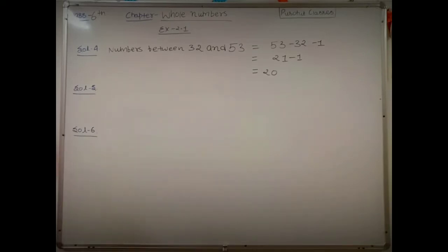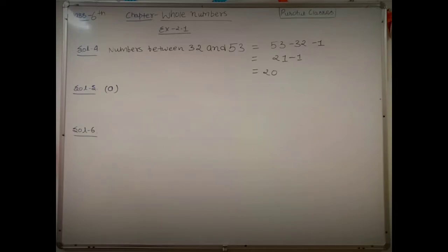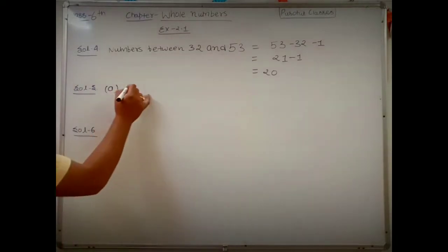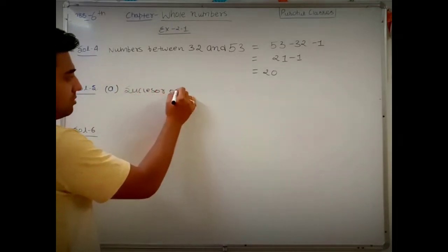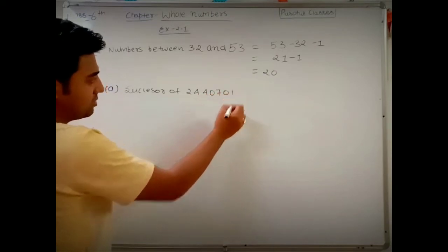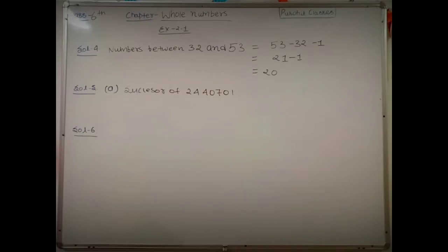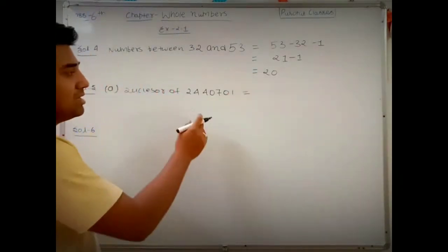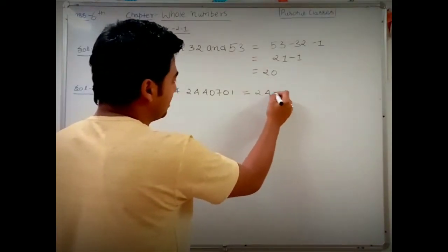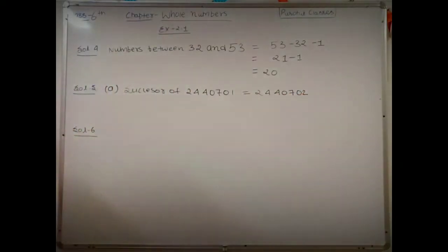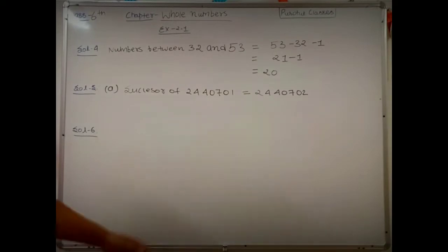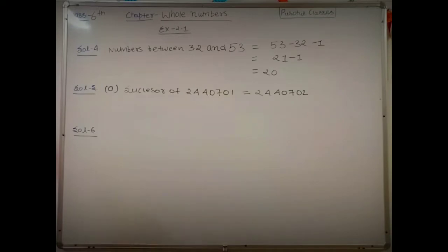Question 5 asks for the successor. Part a: the successor of 24 lakh 40,701. The successor of any number is found by adding 1, so the successor of 24,40,701 is 24,40,702. As covered in the previous video, to find the successor you add 1. Parts b, c, and d you can solve yourself.